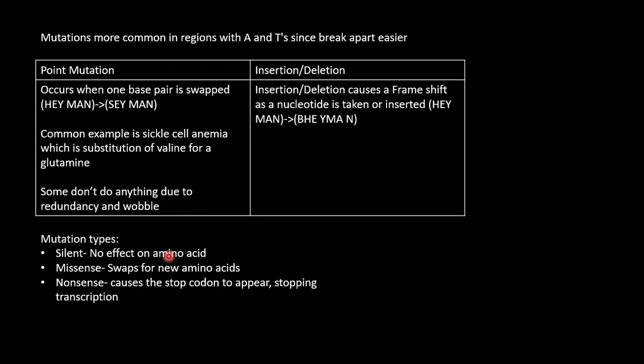A point mutation occurs when one base is swapped. A common example is sickle cell anemia, which is a substitution of valine for glutamine. And some don't do anything due to the redundancy in the code. An insertion or deletion causes a frameshift where everything moves to the left or right. As in the example, a nucleotide is inserted and it ruins the three-codon reading pattern for everything after that. A silent mutation has no effect. Usually the codon that mutated codes for the same protein due to redundancy. A missense swap is a swap for a new amino acid. And a nonsense swap causes the appearance of a stop codon, stopping the transcription.